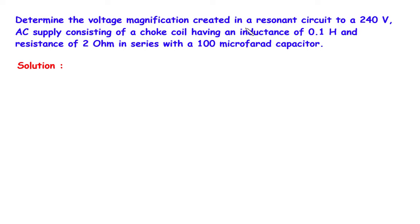Determine the voltage magnification created in a resonant circuit to a 240V AC supply consisting of a choke coil having an inductance of 0.1H and resistance of 2 Ohm in series with a 100 microfarad capacitor.